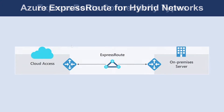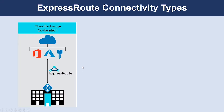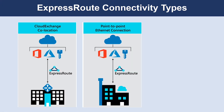There are three ExpressRoute connectivity types, and each serves a different need. The first one is Cloud Exchange. With the Cloud Exchange method, you cross-connect to Azure by using the Ethernet exchange provided by your co-location facility. The next type is Point-to-Point. With the Point-to-Point Ethernet network method, you connect on-premises data centers and offices to Azure through a Point-to-Point Ethernet link.